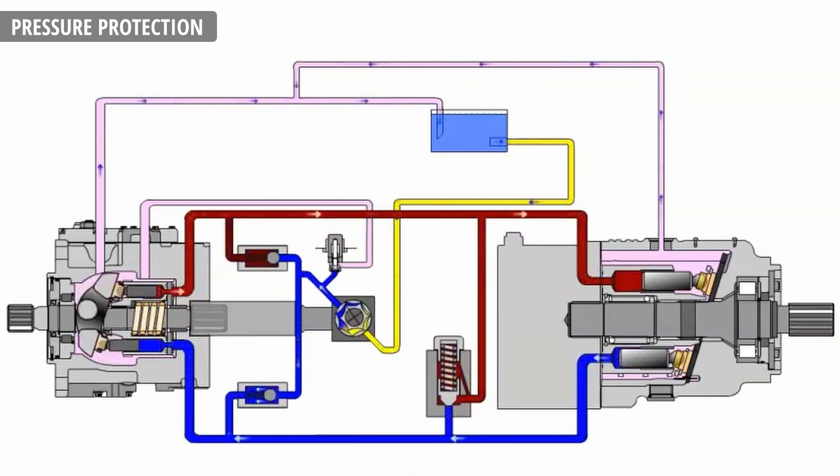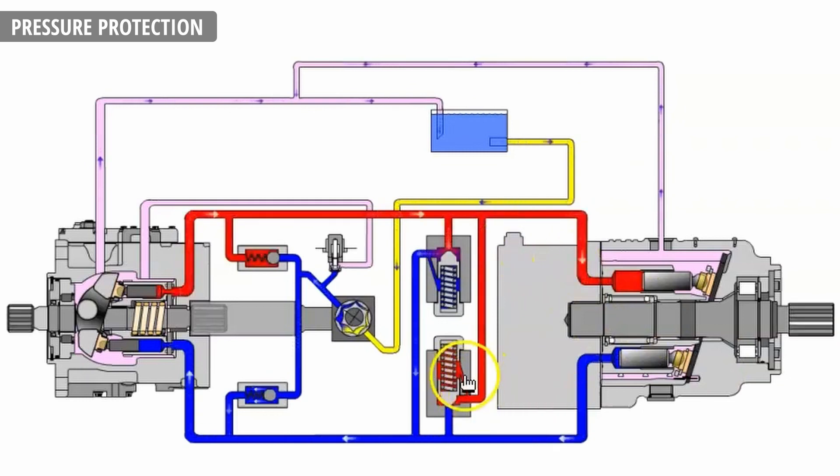Since this valve will protect only one side of the loop, we need to add another one to the other side. Now we have two relief valves, and both sides of the loop are protected. These valves can be mounted on the motor or anywhere on the loop, but it's much more common to have them installed at the pump.